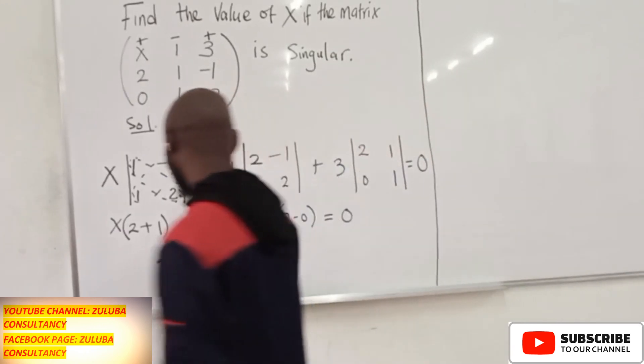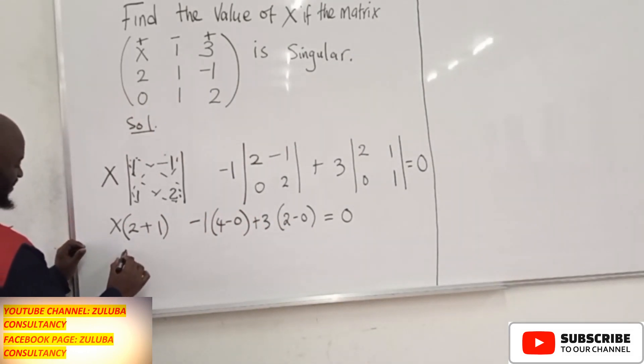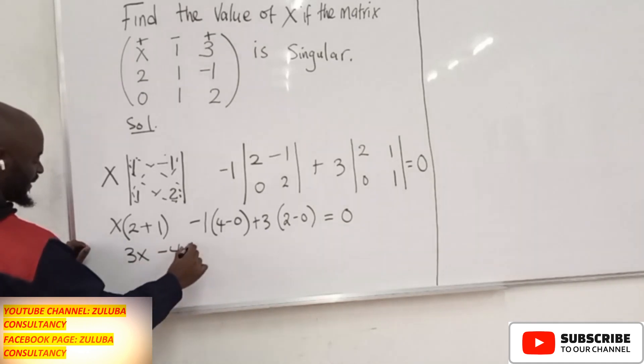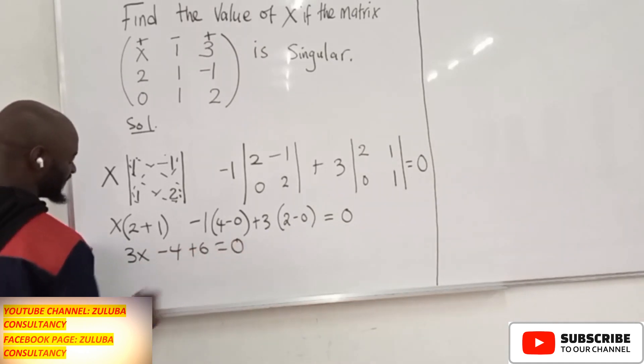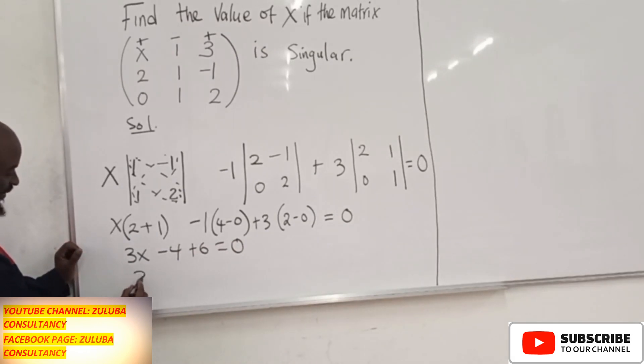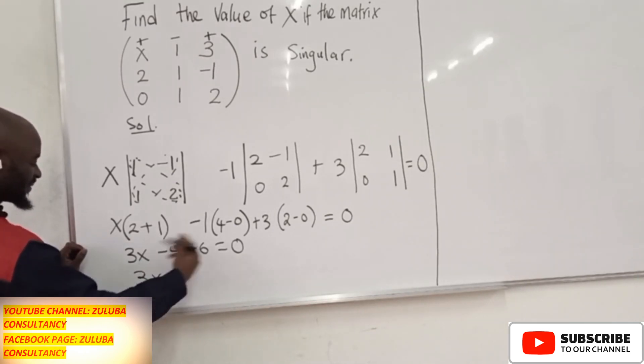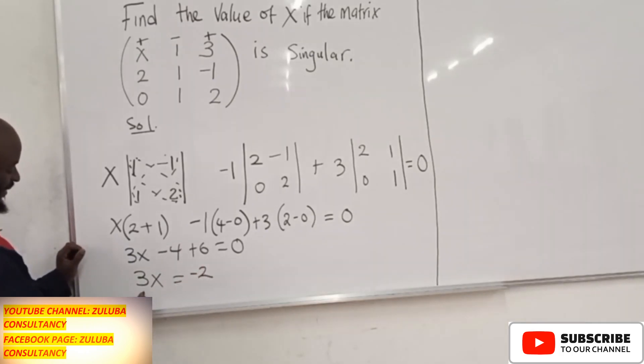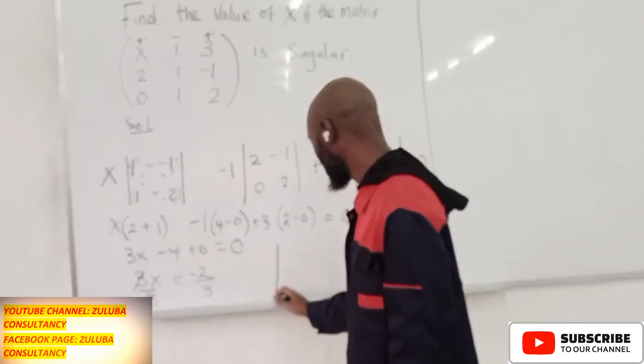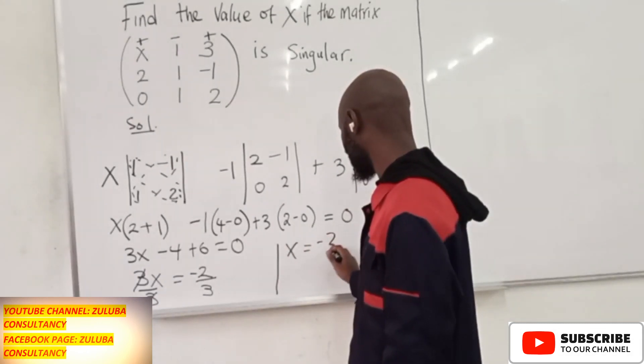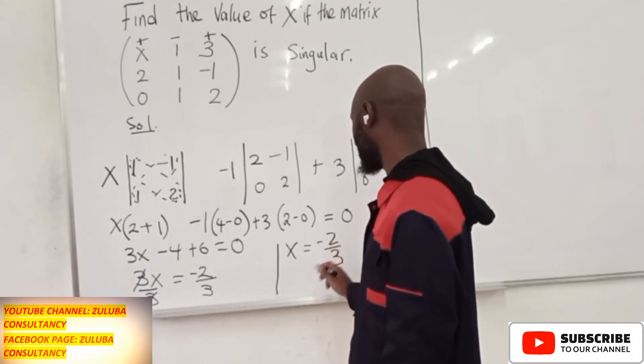The next thing that we do, we try to simplify this accordingly. This will be 3X minus 4 plus 6 is equal to 0. We are going to get 3X is equal to, when we work out this, we get 2. We take it to the other side. We divide by 3 and divide by 3. So we are going to get X is equal to minus 2 over 3.